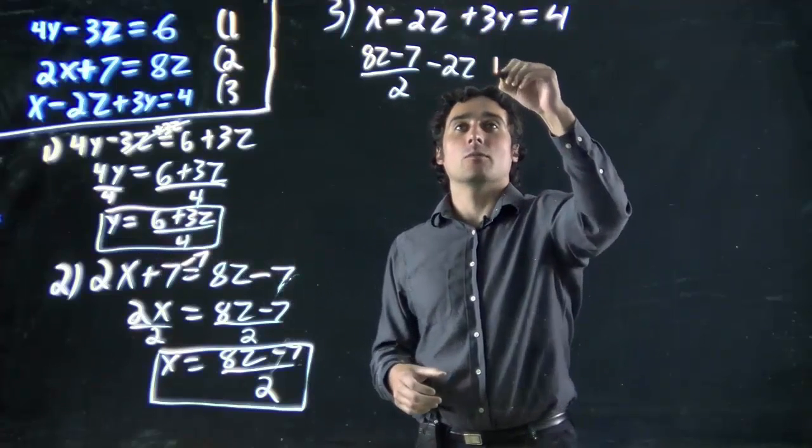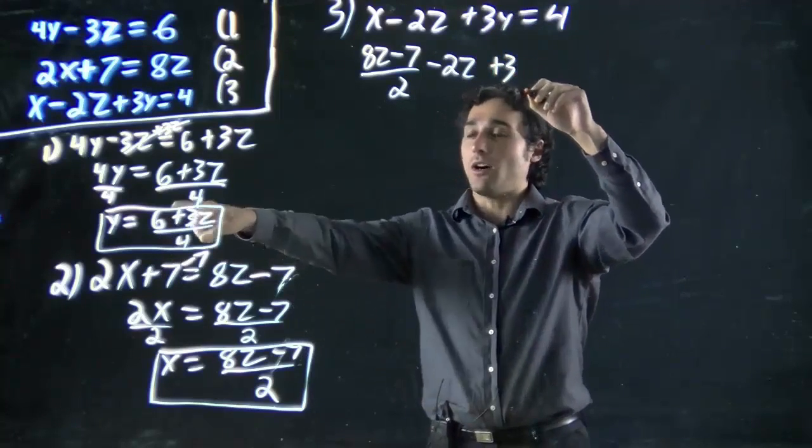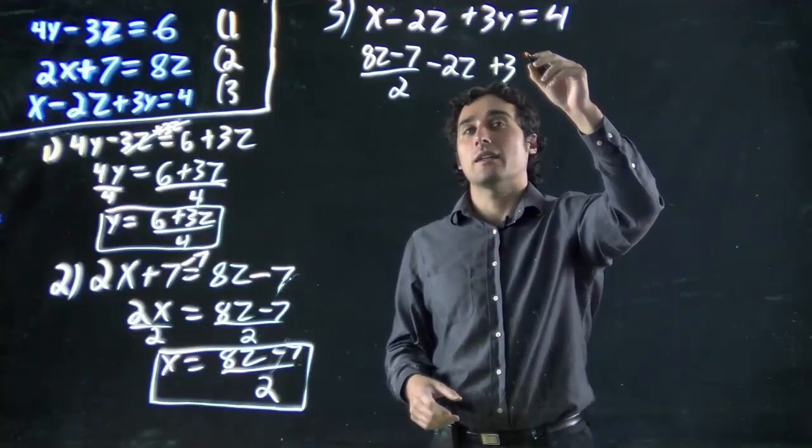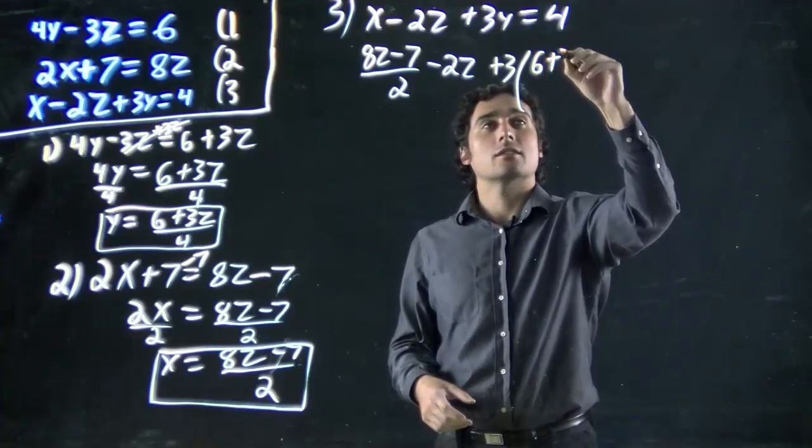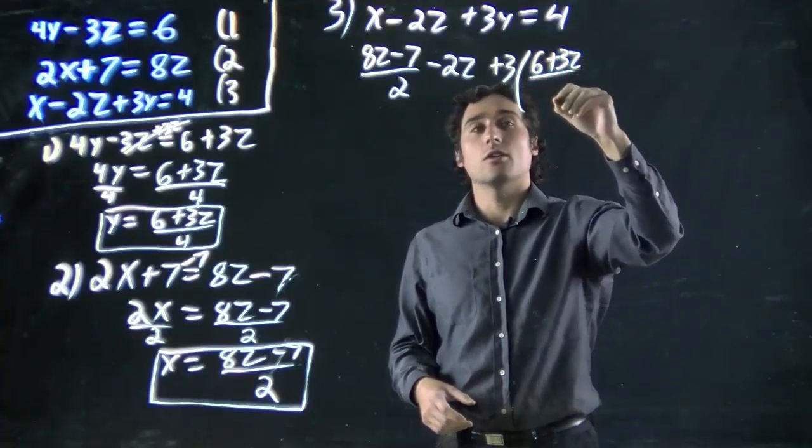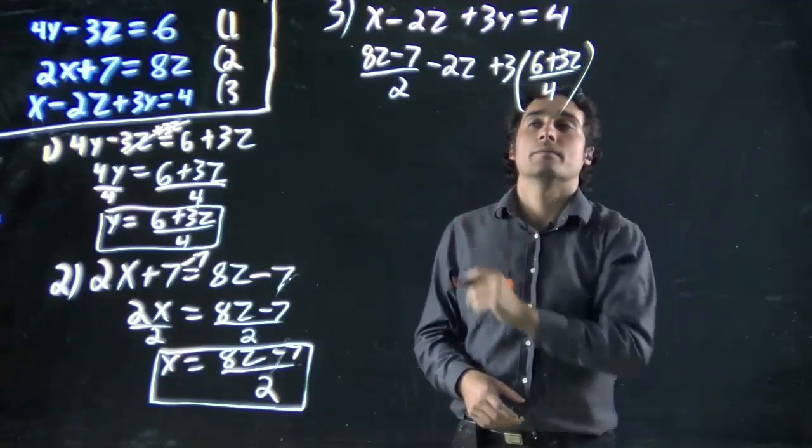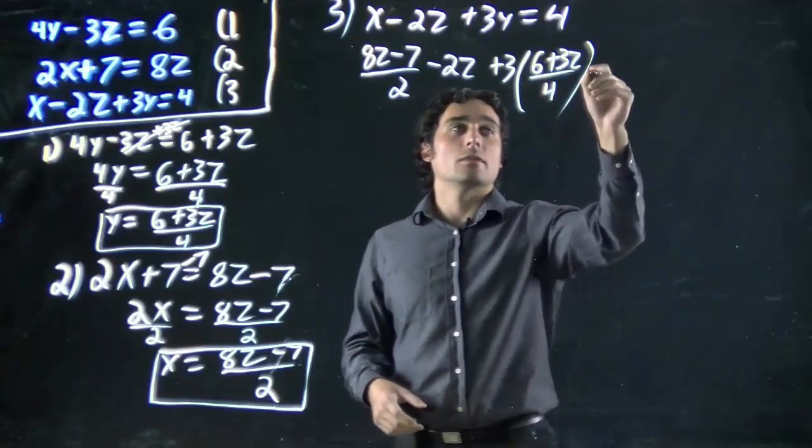Minus 2z remains the same, we're not replacing it. Plus 3y. Well, y we said is this. So plus 3 times all of that. We're replacing y with this. Let's put a good big bracket there, 6 plus 3z all over 4. And all that equals 4.